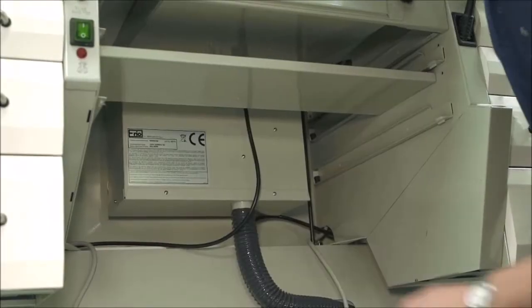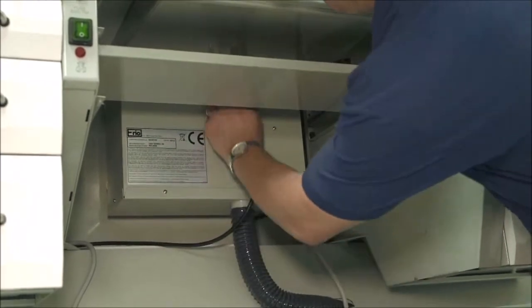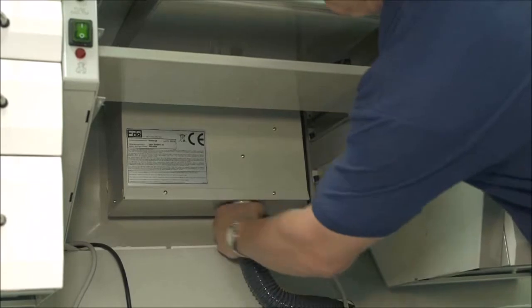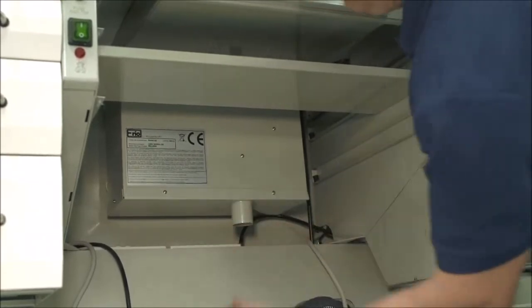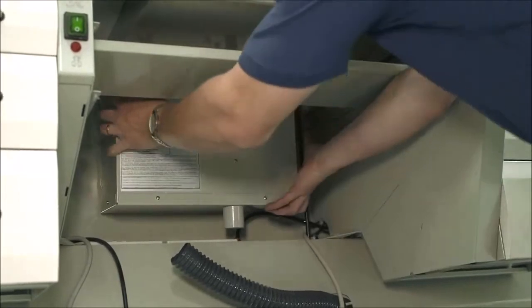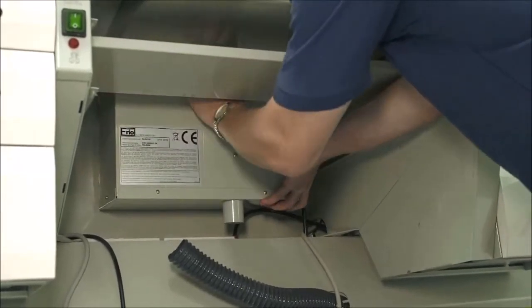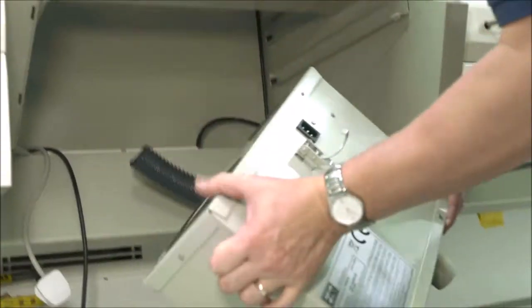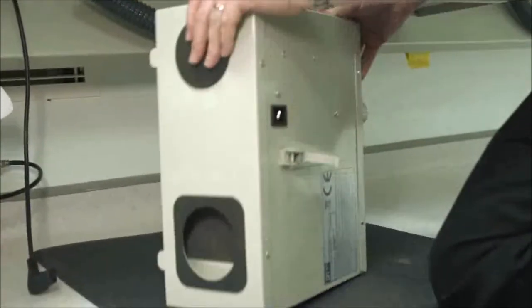To replace the motor box, firstly isolate the power, remove the power supply, pull forward and release the exhaust. Undo the catch at the top, bring the motor box forward, and remove. Bearing in mind it weighs approximately 8 kilograms so it's quite heavy.